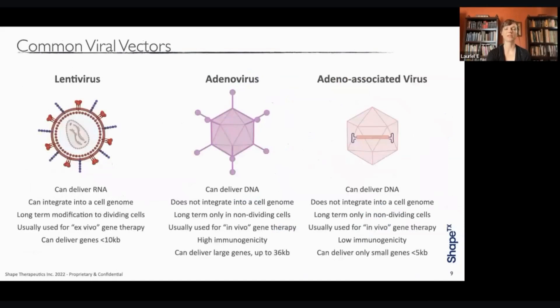For common types of viral vectors, I'll be discussing three: lentivirus, adenovirus, and adeno-associated virus. These viruses have different properties that make them good for treating different types of diseases once they've been turned into vectors. Lentivirus has an RNA genome, so it can deliver RNA into a cell that is then converted into DNA, which integrates into the host genome. This means it can make long-term modifications to dividing cells because that genetic information would be passed down to daughter cells.